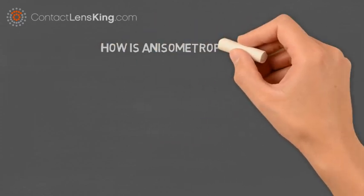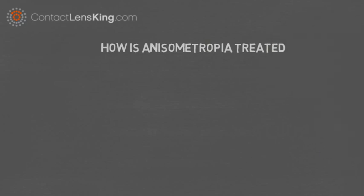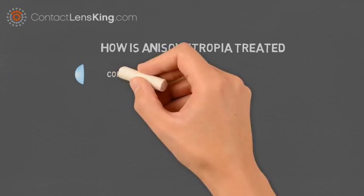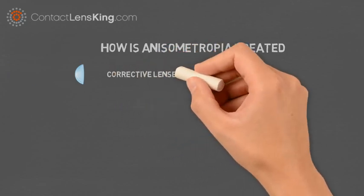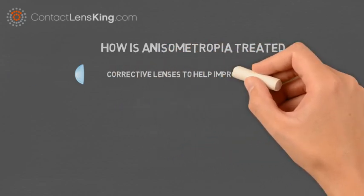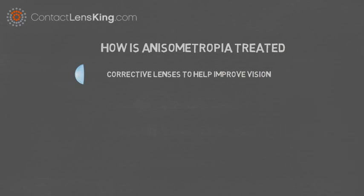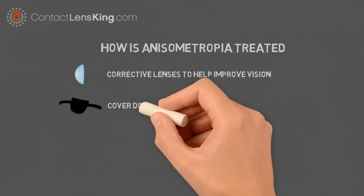How is anisometropia treated? Depending on the individual case, one of these treatments may be suggested. Corrective lenses, such as eyeglasses or contact lenses, can be used to improve vision in the eye.